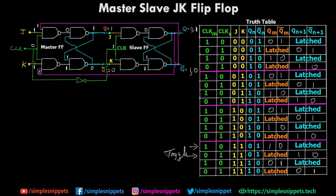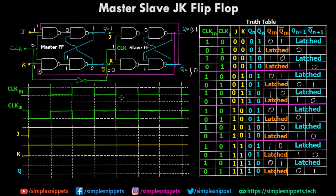That was the toggle state in the truth table. Let's now get into more detail and see the toggle state in action on the timeline chart, where the signals are being depicted. We are going to track q(n+1) across these four cases.